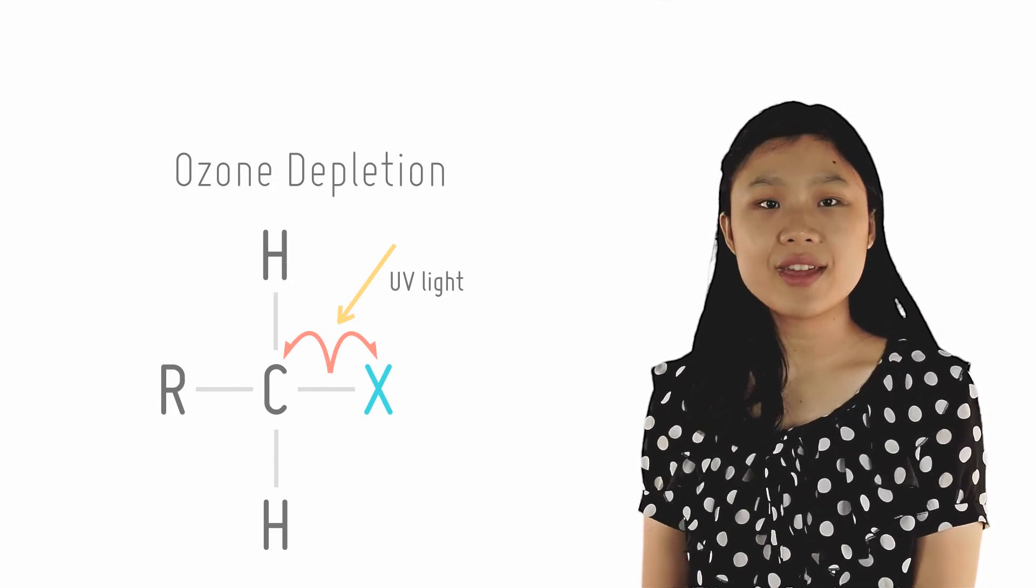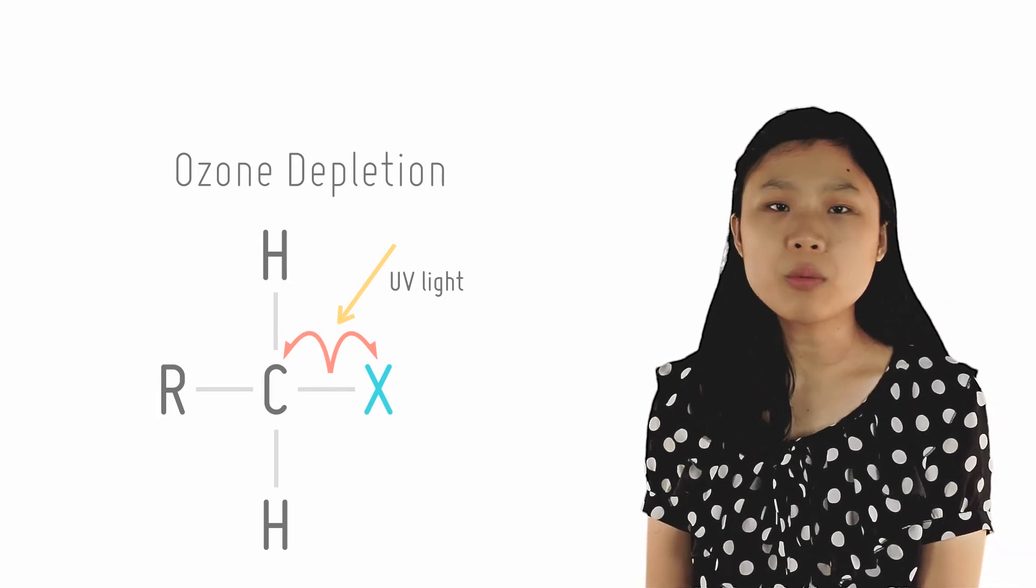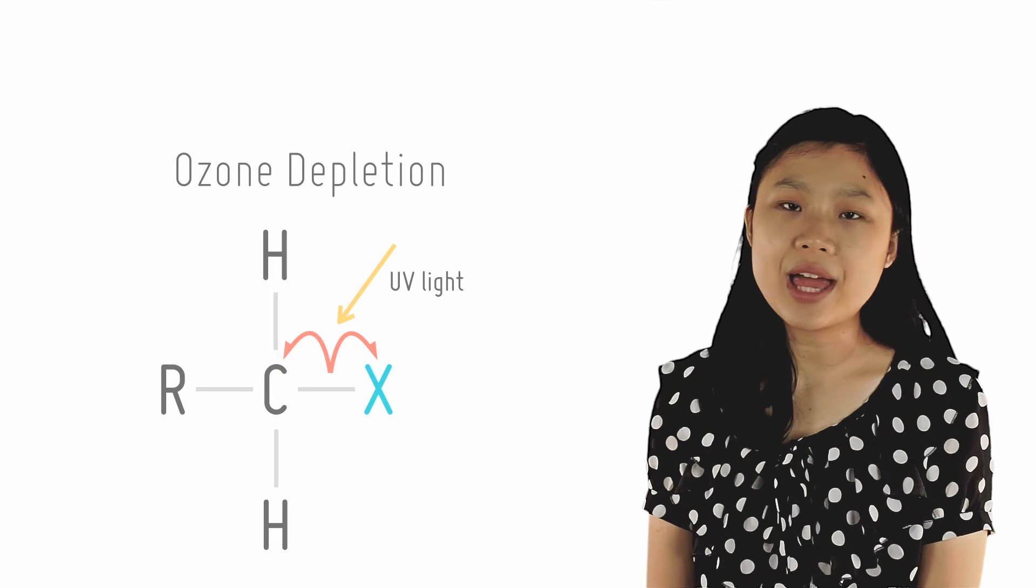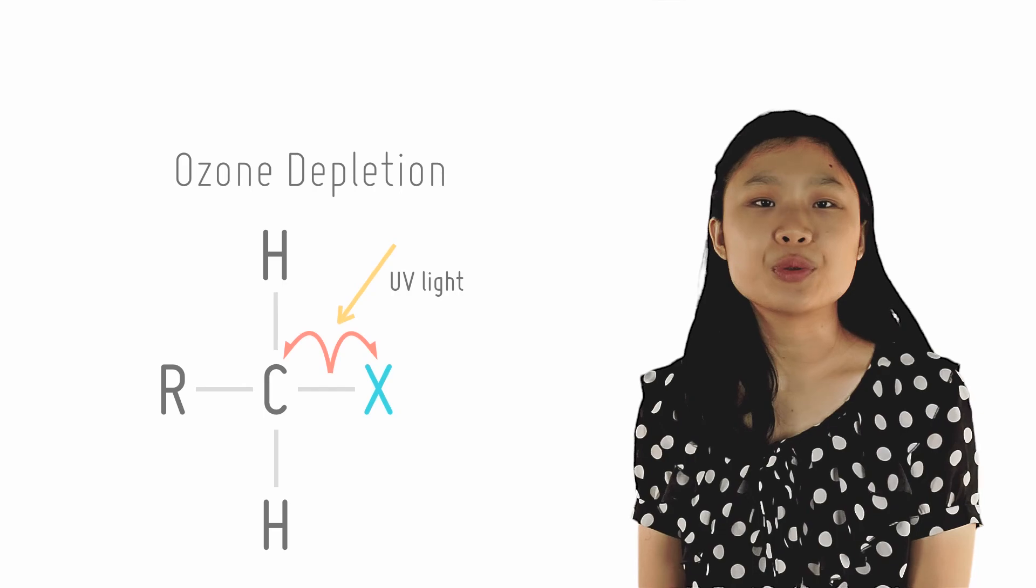A viable alternative are compounds containing only CF bonds, since these bonds are much stronger, and will not be broken by UV light in the upper atmosphere, and thus no radicals will be formed. The ozone layer has started to repair itself.